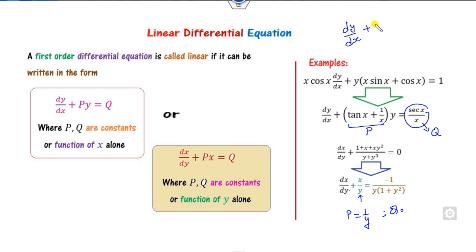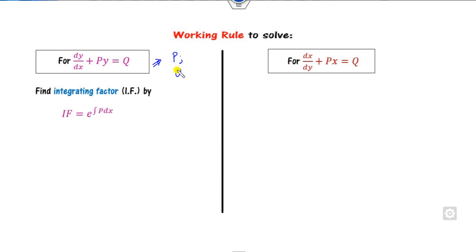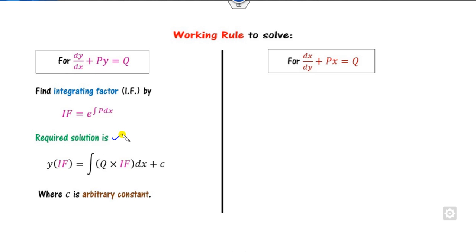For example, if you write dy/dx + 2y = 3, this is my p (a constant function independent of y) and this is my q. Once you identify a linear differential equation, the solution method uses the integrating factor: e raised to the power of the integral of p dx. The required solution is y times the integrating factor equals the integral of q times the integrating factor plus constant c.